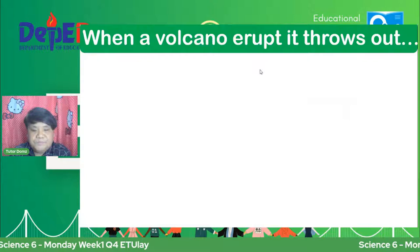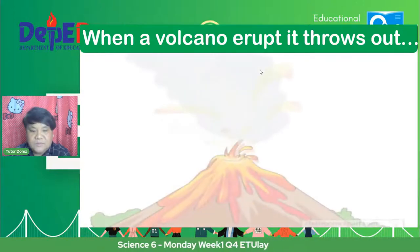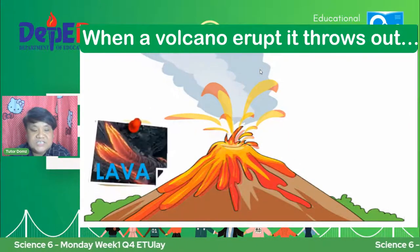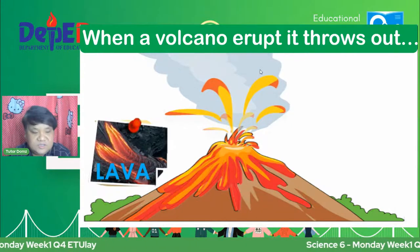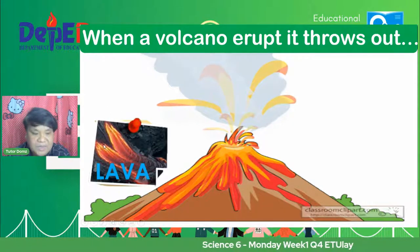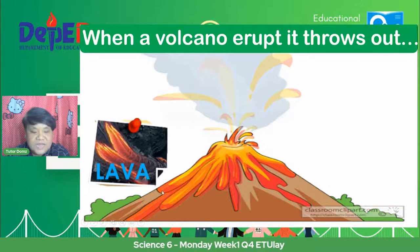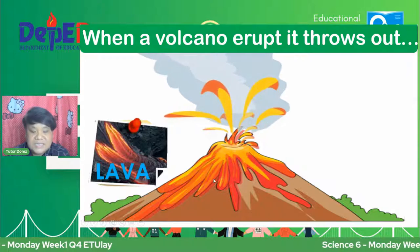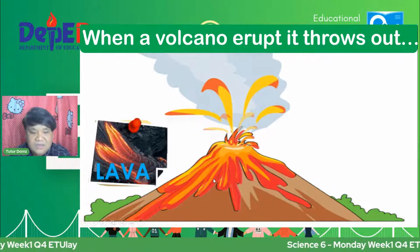When a volcano erupts, it throws out different materials. Pagka nagkakaroon ng pagsabog, may mga lumalabas sa vulkan. Ano yung unang lalabas sa vulkan? Nandyan yung lava. Yung lava na yan, galing yan sa magma — pag nasa labas na siya ng vulkan at dumadaloy, that is the lava. Meron din siyang nilalabas na rocks, yung mga nagtatalsikan — alam nyo ba rocks yan? Rocks na mainit, kulay-pula.